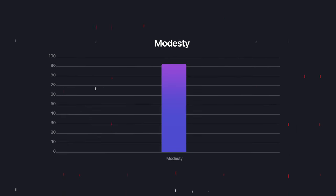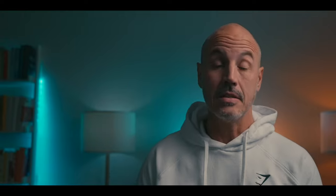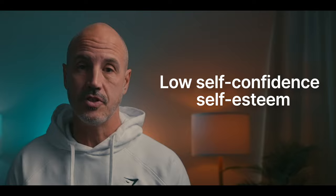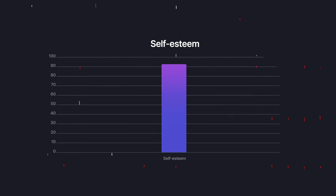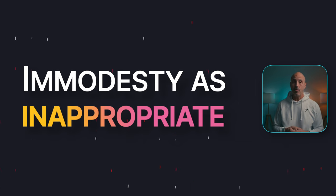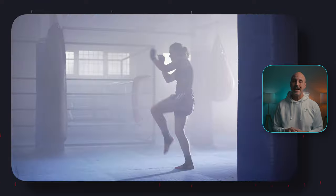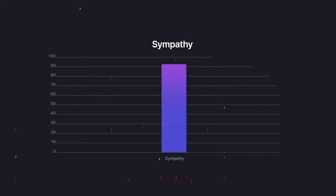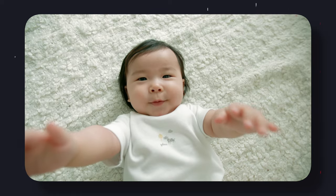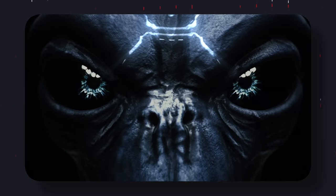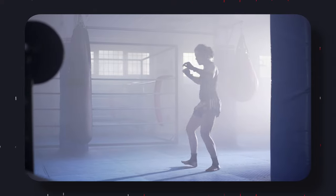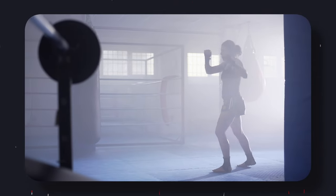High scores in modesty do not like to claim that they are better than other people. In some cases this attitude may derive from low self-confidence or self-esteem, though some people with high self-esteem also find immodesty inappropriate. People who describe themselves as superior tend to be seen as arrogant. Sympathetic people are tender-hearted and compassionate — they feel the pain of others and are moved to pity. People low in sympathy are not affected by human suffering; they pride themselves on making judgments based on reason and are more concerned with truth and impartial justice than mercy.